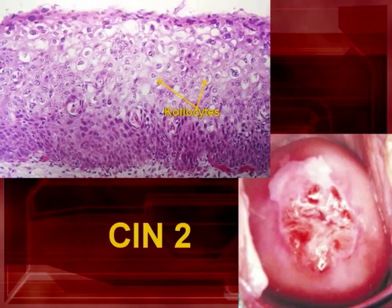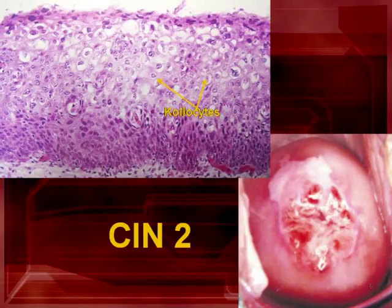Koilocytes are indirect evidence of the replicative phase of HPV infection. This is CIN2. The acetowhite epithelium looks denser — grade 2 — and under larger magnification we may be able to see the presence of atypical vessels. The image on the left shows the microscopic view of CIN2, where the dysplastic cell layer extends up involving two-thirds of the epithelium. There is also evidence of HPV infection by the presence of koilocytes.